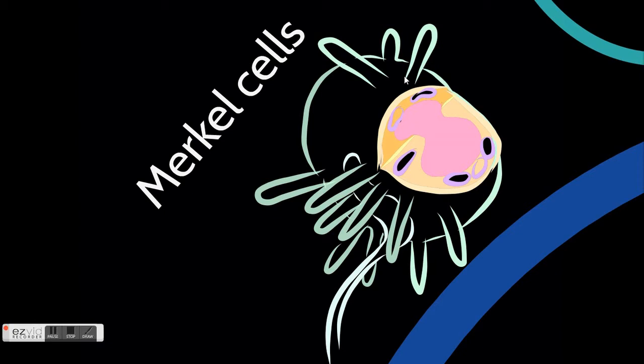The Ruffini ending is a capsule of connective tissue that surrounds a ramified network of thin branches of a nerve ending. They perceive local actions on skin, like displacements and touches.